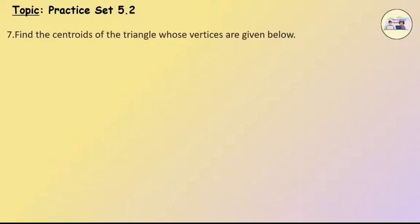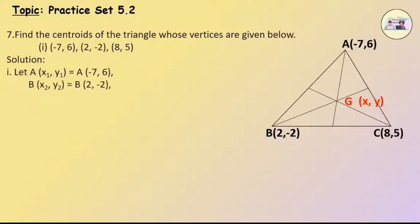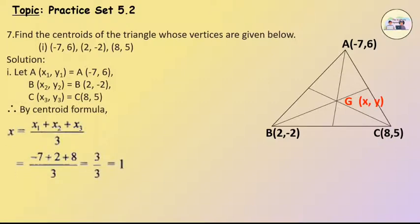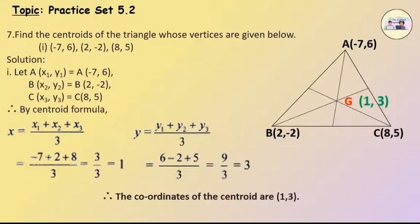Q7: Find the centroid of the triangle whose vertices are (-7, 6), (2, -2), and (8, 5). Solution: Let A(x1, y1) = (-7, 6), B(x2, y2) = (2, -2), and C(x3, y3) = (8, 5). By the centroid formula, x = (-7 + 2 + 8)/3 = 3/3 = 1, and y = (6 - 2 + 5)/3 = 9/3 = 3. Therefore, the coordinates of the centroid are (1, 3).